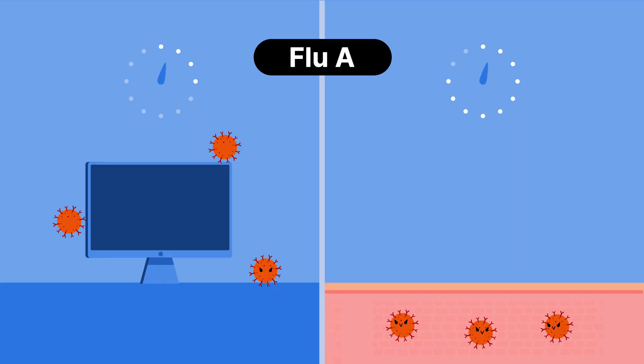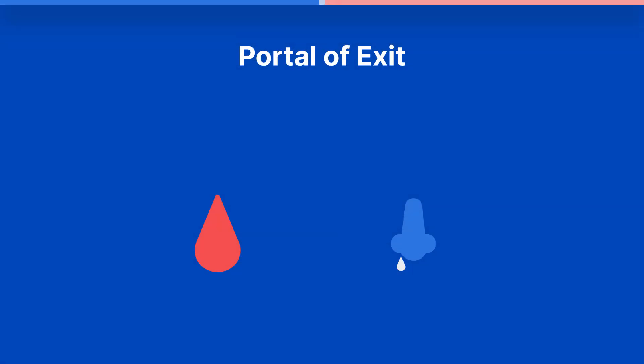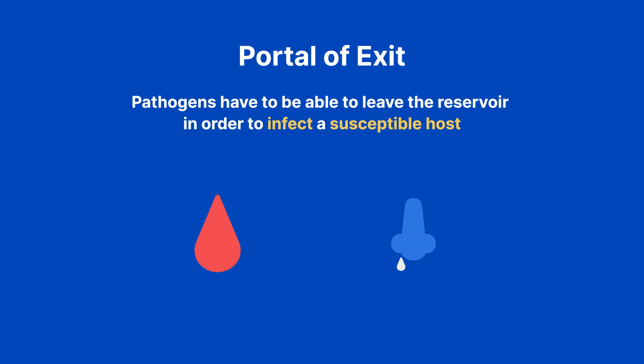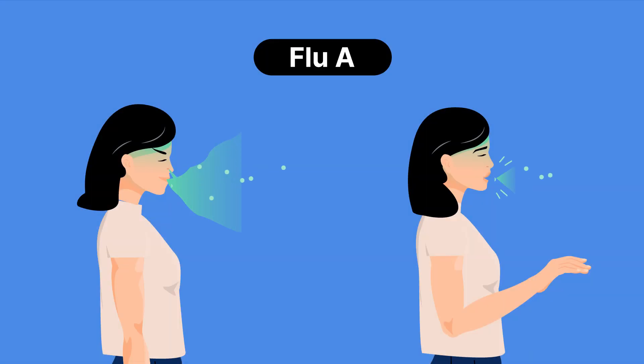Going back to our influenza A example, this virus can only live on surfaces outside of the reservoir for a very short period of time, but can survive for a long period of time inside of a human. The third link is the portal of exit. Pathogens have to be able to leave the reservoir in order to infect a susceptible host. For influenza A, the portal of exit would be droplets from a sneeze or cough.